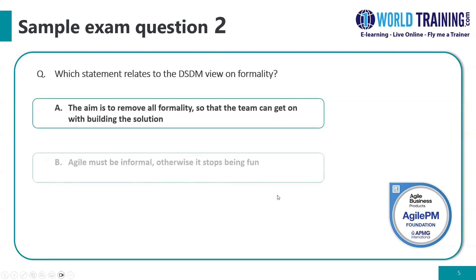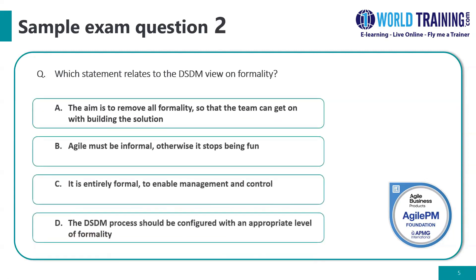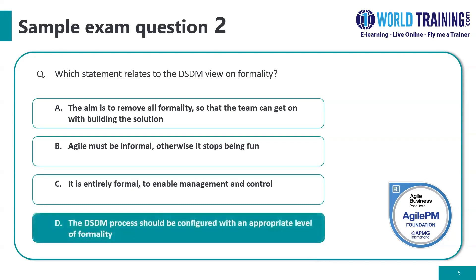Question number two: which statement relates to the DSDM view on formality? The correct answer is D: the DSDM process should be configured with an appropriate level of formality. We would need to scale up or scale down the framework depending on the needs of the project. A is wrong — the aim is not to remove all formality. B is also wrong — Agile could be informal, but it need not necessarily be a must-be-informal scenario, and it is not entirely formal. So D makes sense.